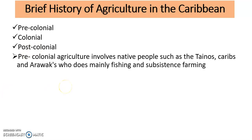For the pre-colonial agriculture, it involves native people such as the Tainos, the Caribs, and Arawaks, who mainly did fishing and subsistence farming. That is pre-colonial agriculture — mainly fishing and just farming to support themselves.